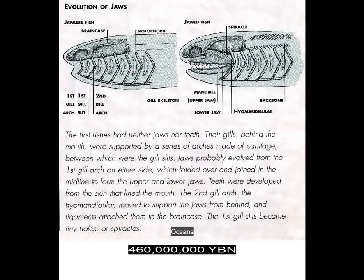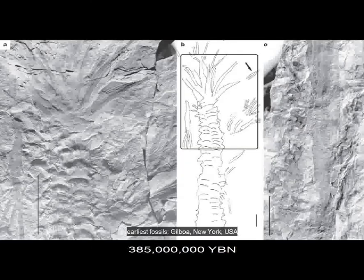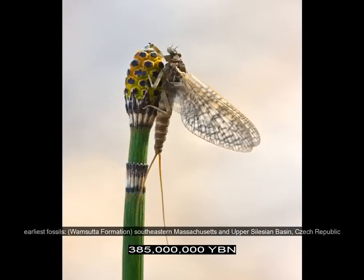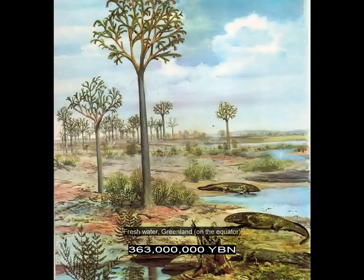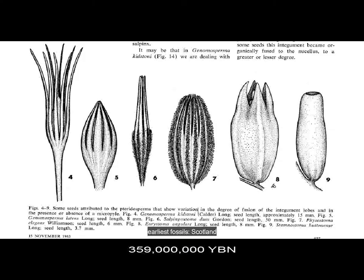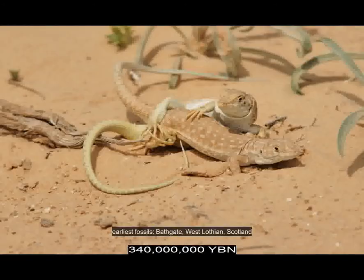Orthopod millipedes. Jawed vertebrates. First vertebrate teeth. Vascular plants. Lung. First forests. First flying animal — arthropod insect. First tetrapods — organisms with four feet. The amphibians: first limbs, arms and legs, and fingers. Vertebrates live on land. First seed. Hard shell egg. The amniota — ancestor of reptiles, mammals and birds. Start of vertebrate internal fertilization.